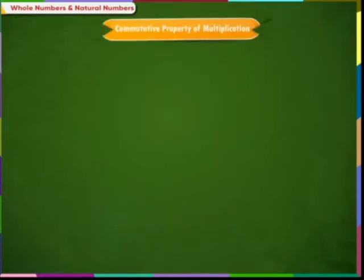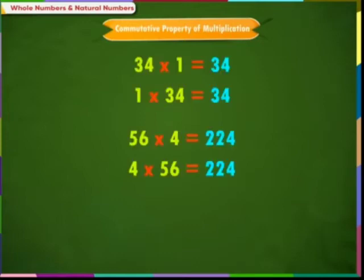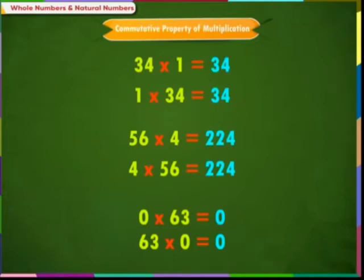The product of two whole numbers is the same irrespective of their order — this property is called the commutative property of multiplication. Note that commutative property is not applicable to subtraction, as subtraction is not commutative for whole numbers. Similarly, division is not commutative for whole numbers.